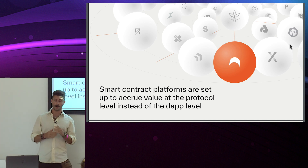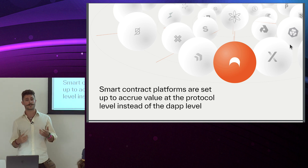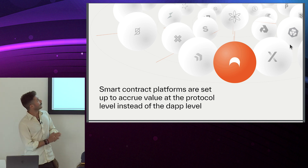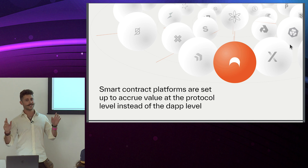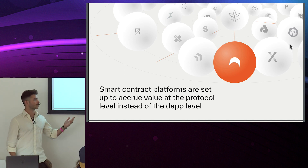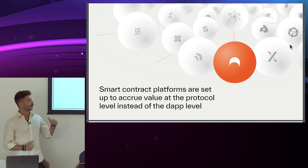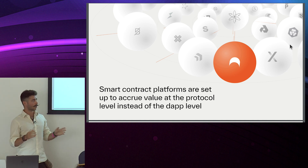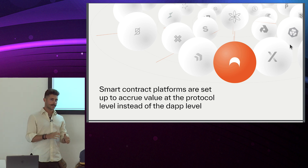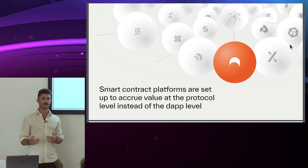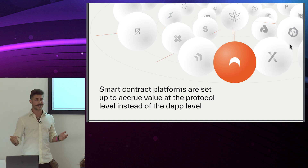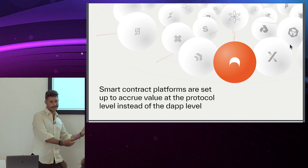We're at an inflection point because there are now a lot of layer ones, making it crucial for developers to understand where to deploy their dapps. Archway is a different breed of layer one — it uses the Cosmos SDK and is optimized to let developers capture value via its flexible economic model. The model is also secure enough to prevent spam and malicious attacks, enforced at the gas unit level with a minimum gas price.